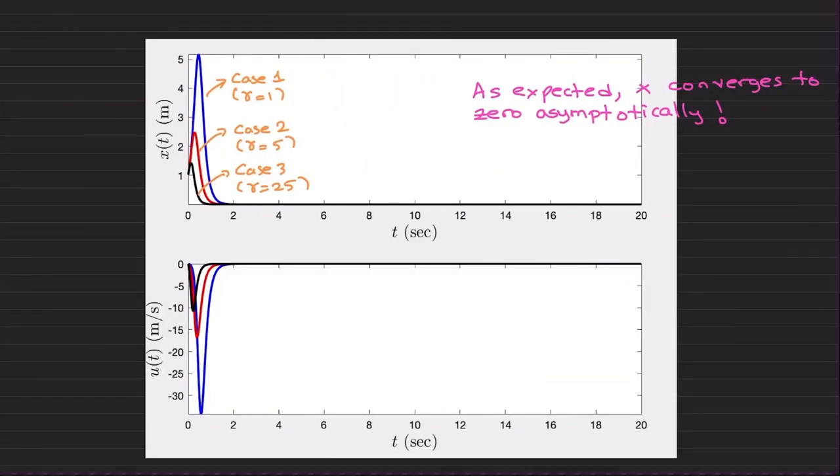Here are the results. I have the same simulation time of 20 seconds. When you choose gamma equals to 1 versus 5 versus 25, you see that in all cases, as expected, x converges to zero asymptotically. When you choose a low adaptation gain, the uncertainty initially affects your system more. As you increase your adaptation rate, the effect of the uncertainty is much less and you start from initial condition 1 and quickly converge to zero.